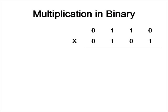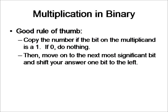So now let's start focusing on the least significant bit, that is the one. A good rule of thumb is that we just copy the number if the bit on the multiplicand is a one. Otherwise, if it is a zero, we just do nothing.